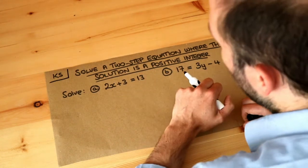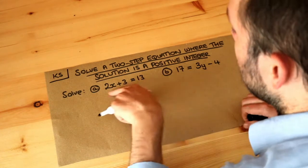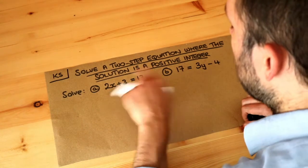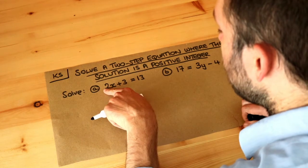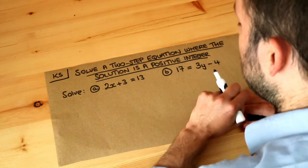We've got these equations here, and they're called equations because we have an equal symbol in each. To solve this equation just means we want to find the value of x. So this means that 2 times some number x, we don't know what it is, plus 3 gives you 13.